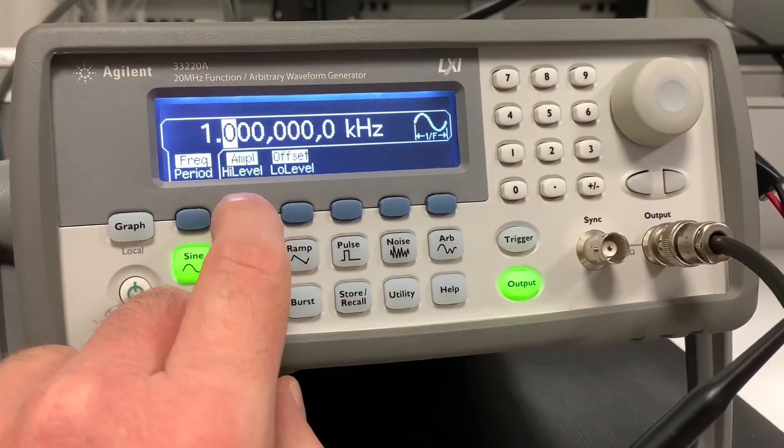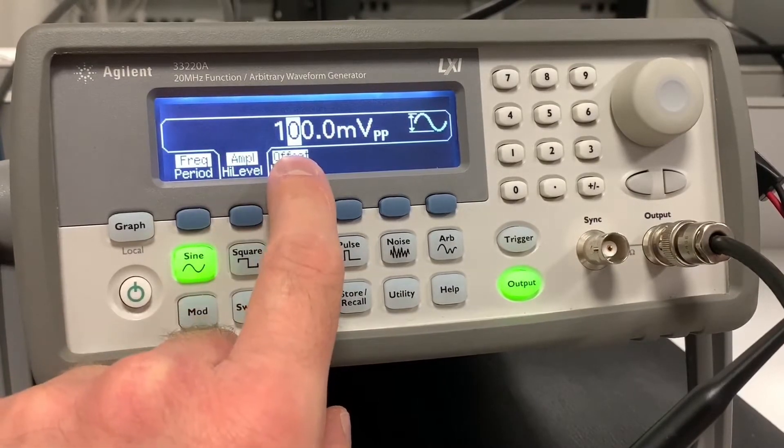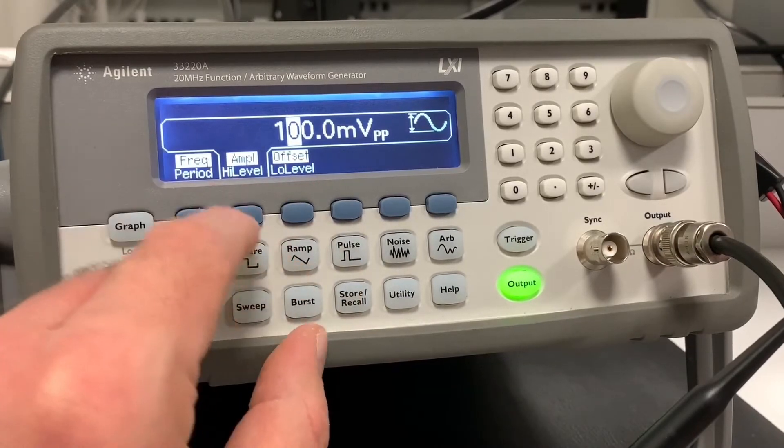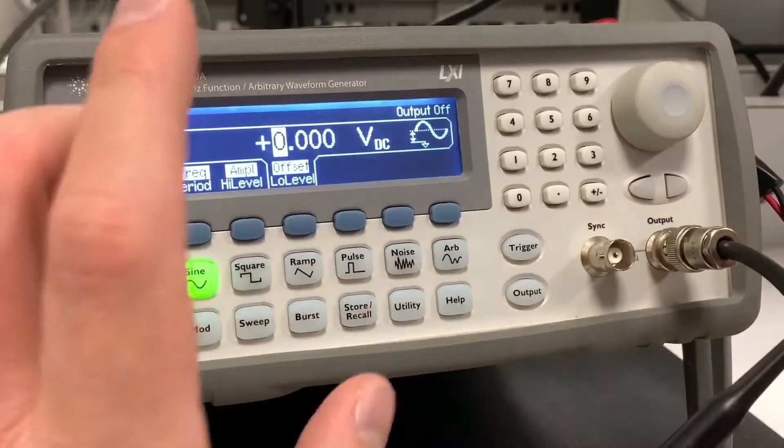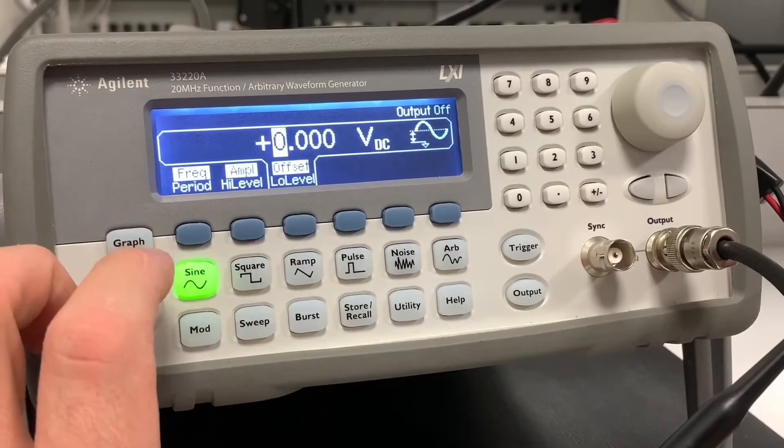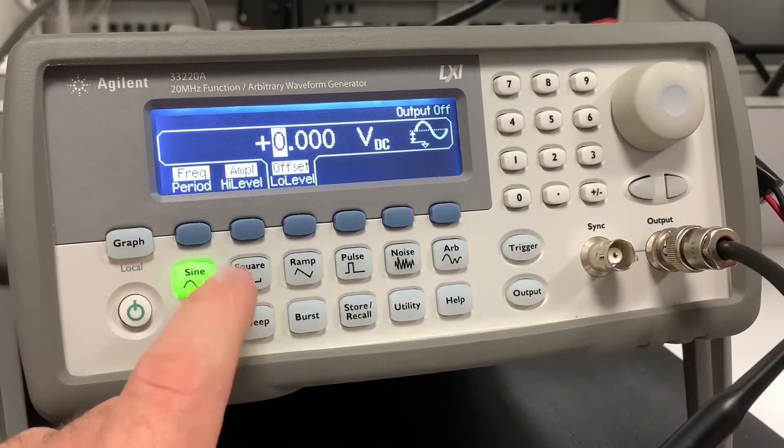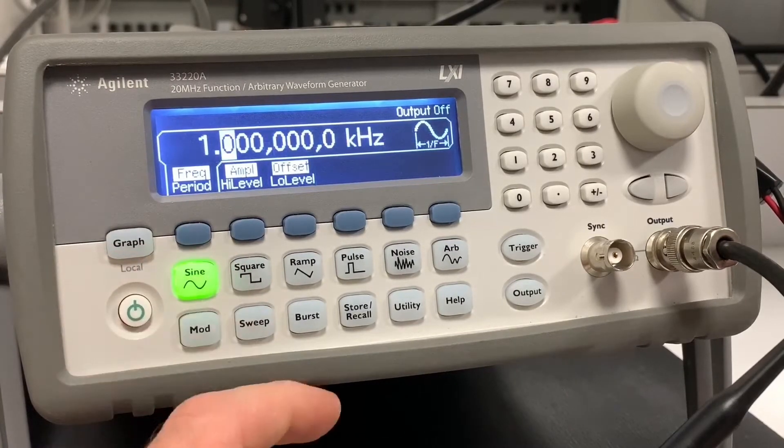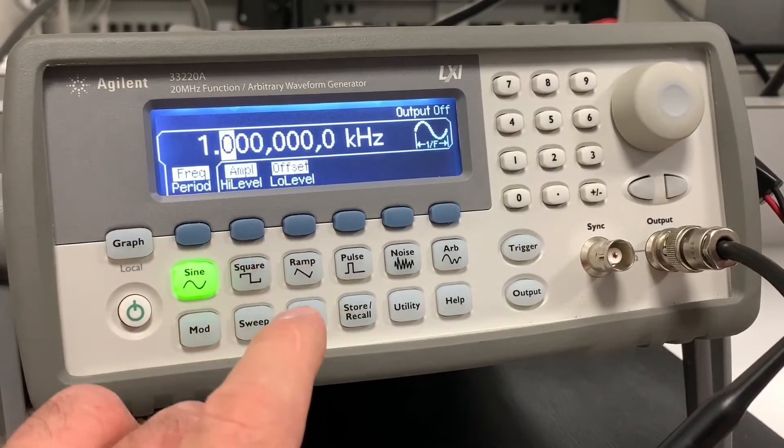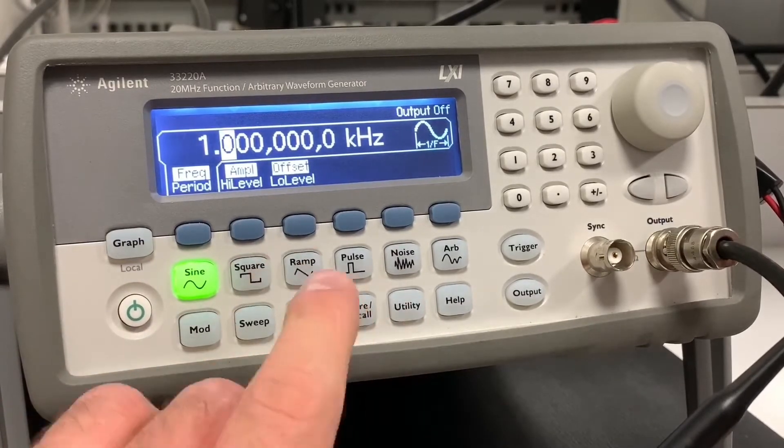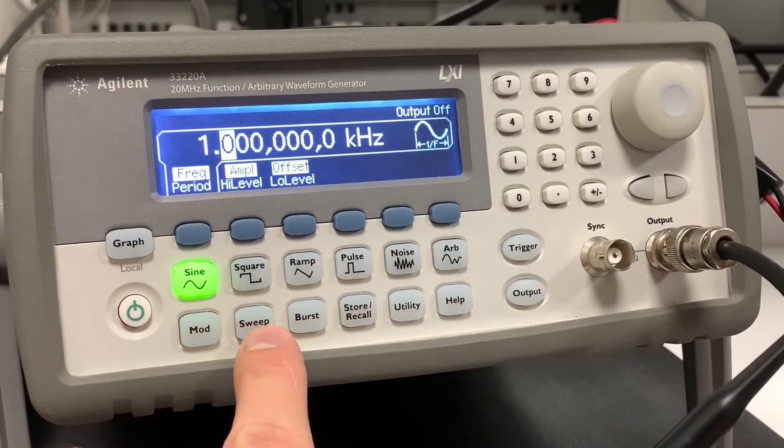And the amplitude is 100 millivolts peak to peak. So it always resets to this. And finally, one of the most useful features of a function generator, which you may or may not use, but it's still pretty useful to know anyway. If you don't want to learn anything else, learn about sweep.